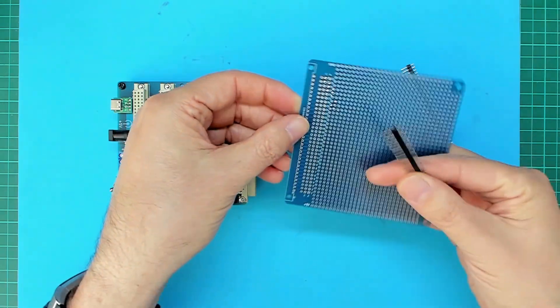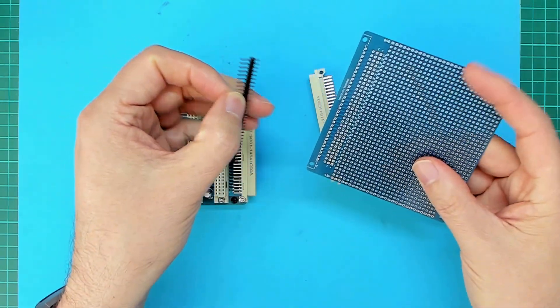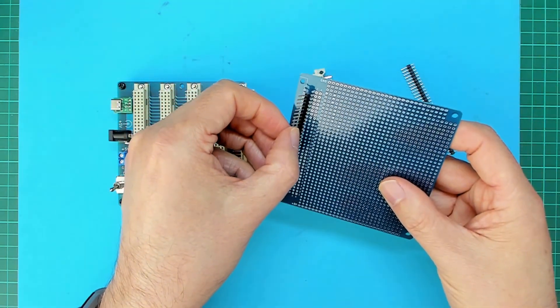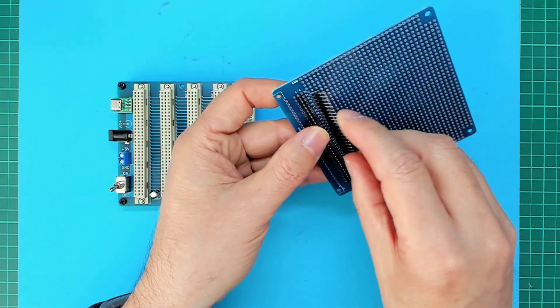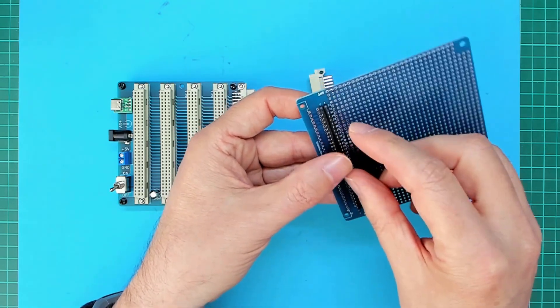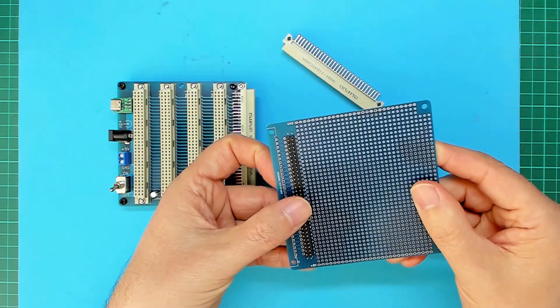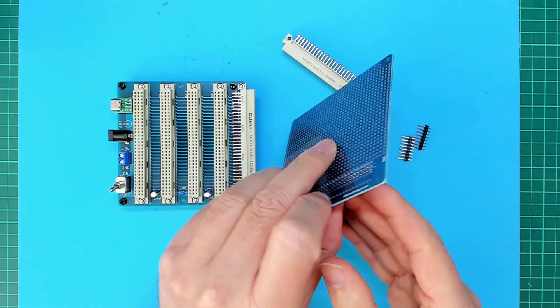All right, so let's fit those. Make sure I've got the board around the right way. So that's the top of the board. Put that in row C and the other one in row A.